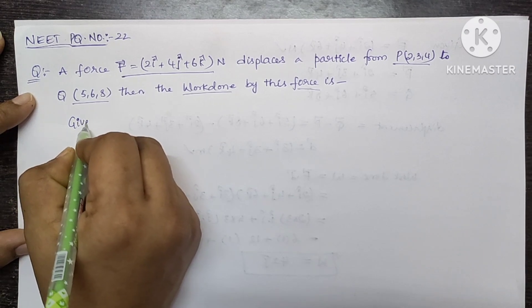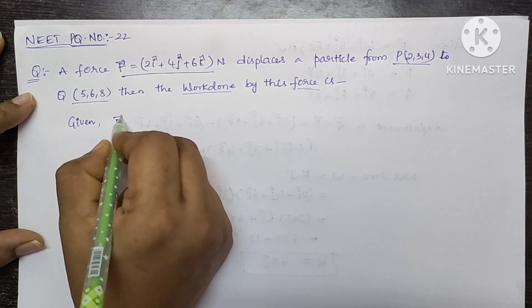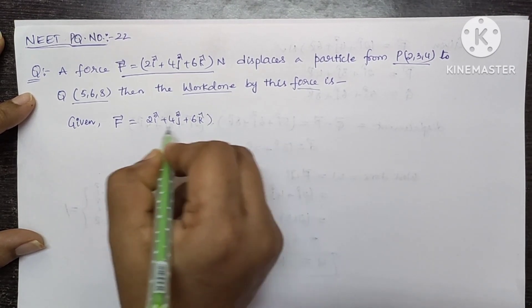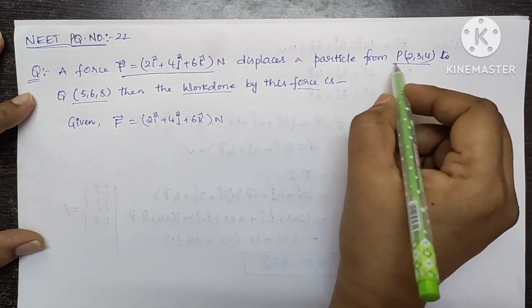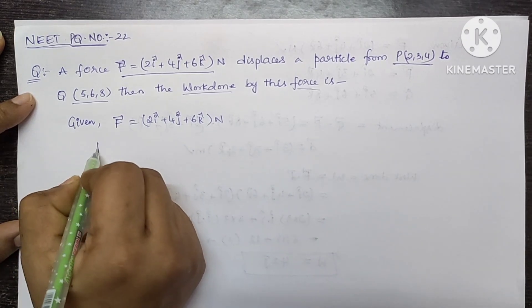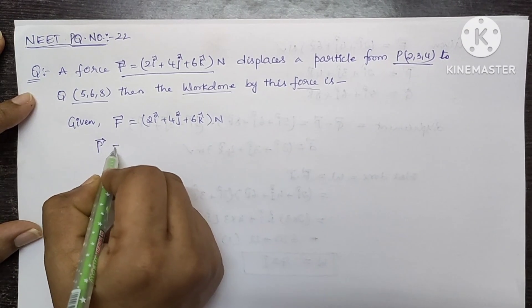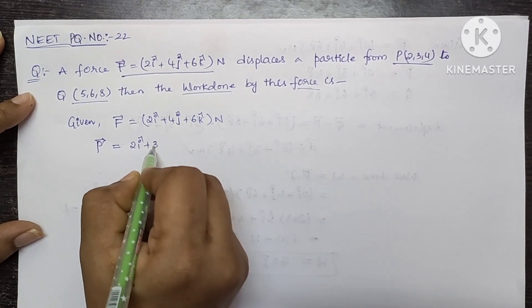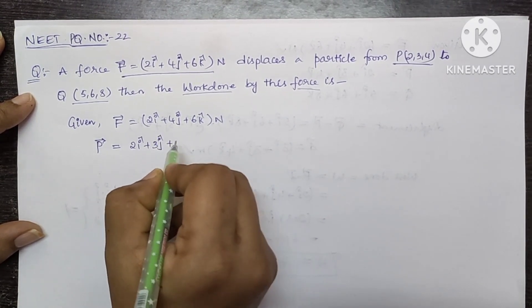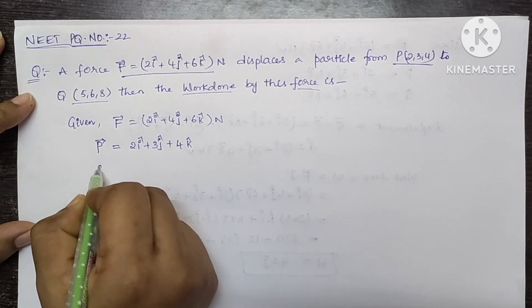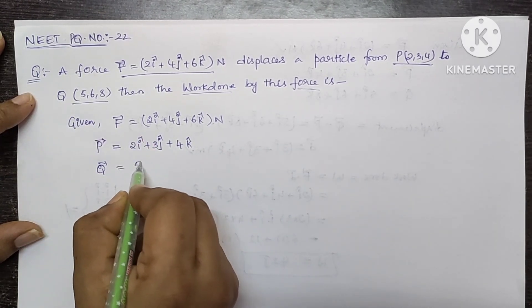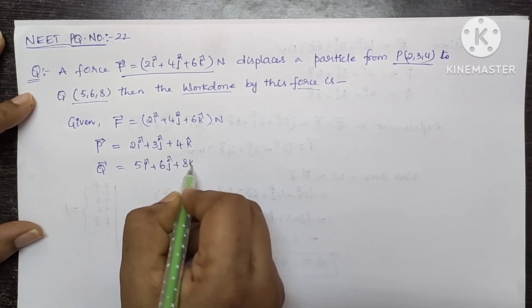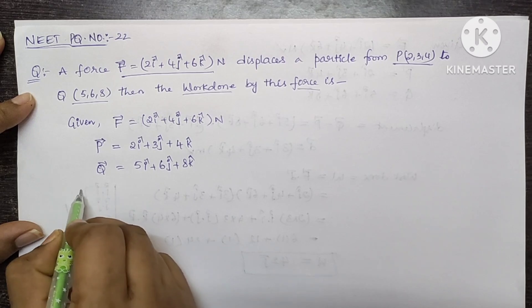So here the given force is equal to 2i cap plus 4j cap plus 6k cap Newton, and it displaces a particle from P to Q. So let's write this in vector form. P is equal to 2i cap plus 3j cap plus 4k cap, and Q is equal to 5i cap plus 6j cap plus 8k cap. Let us find the displacement.